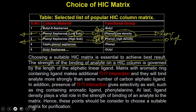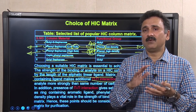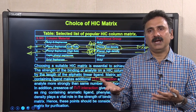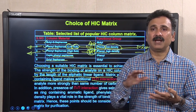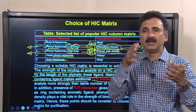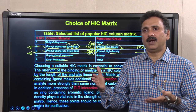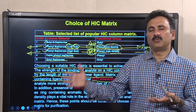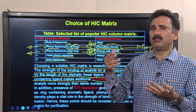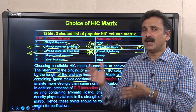The strength of binding of an analyte on an HIC column is governed by the length of the aliphatic linear chain. Matrices with aromatic ring-containing ligands make additional pi-pi interactions. If you have aliphatic groups attached to the matrix you will have lower affinity, whereas if you have aromatic groups, they show additional interactions with the hydrophobic patches on the protein, giving higher affinity. Depending on how much salt concentration your protein can withstand and how much affinity you require, you can choose matrices containing aliphatic or aromatic side chains.